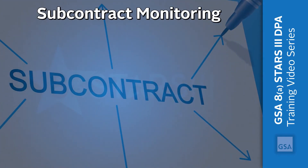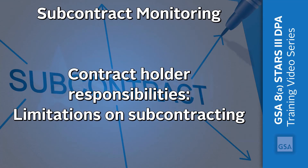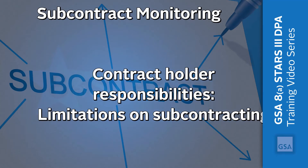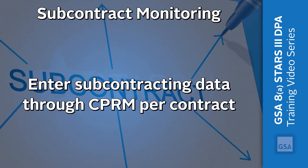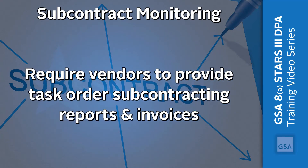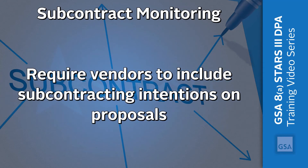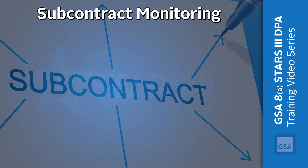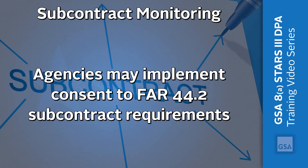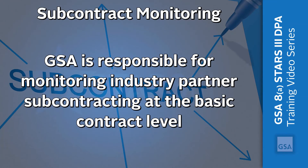Remember, if subcontracting is a factor in your task order, then each party has a responsibility. Contract holders must be compliant with the limitations on subcontracting clause. They must also enter subcontracting data through the Contract Payment Reporting Module in accordance with the contract. Agencies may require the vendor to provide task order subcontracting reports along with invoices and include their subcontracting intentions on proposals. They may implement consent to subcontract requirements outlined in FAR 44.2. GSA is responsible for monitoring industry partner subcontracting at the basic contract level and handling agency questions on subcontracting.